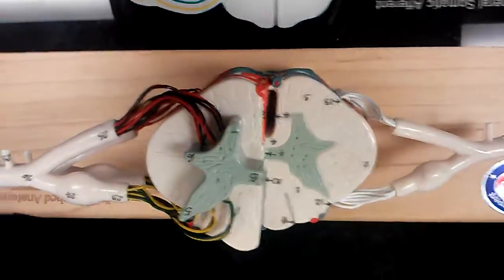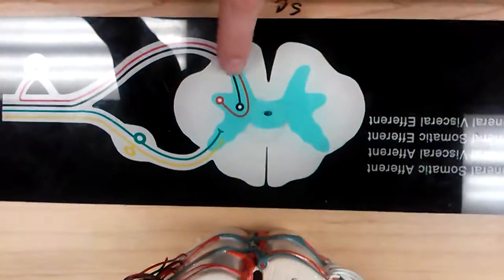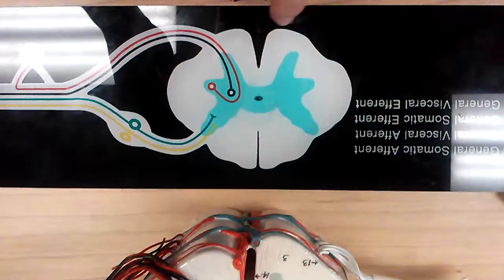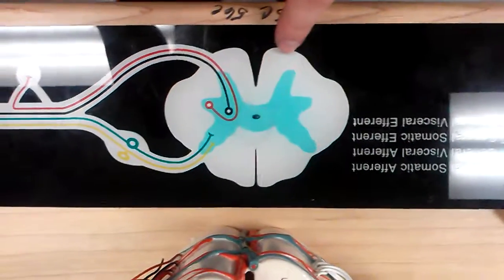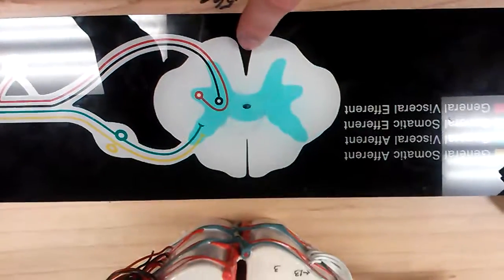So to start, the anterior median fissure is this one, because anterior means in the front, and the fissure is going to be bigger than the sulcus, which is in the back. So anterior median, because it's in the middle, and it's anterior in the front, median fissure.